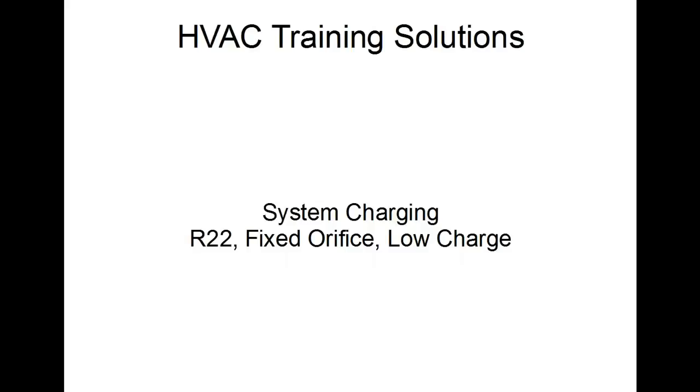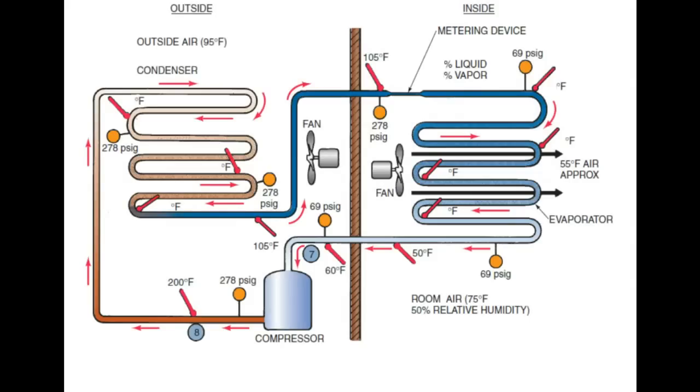System charging. Hey, let's take a look at an R22 system, fixed orifice and a low charge and see what's going on with this refrigerant and the refrigeration cycle. We're only going to look at the evaporator side at this point. For a quick review, this is our diagram from Module 3. And in a system that is properly charged, you do have a solid column of liquid refrigerant that enters the metering device. Remember, this is fixed orifice.